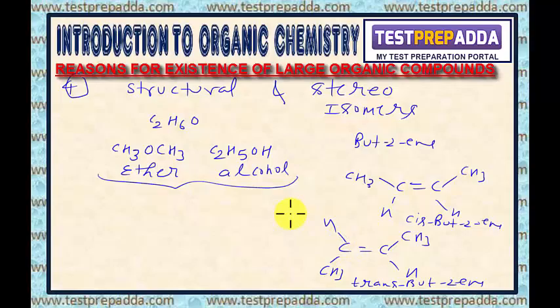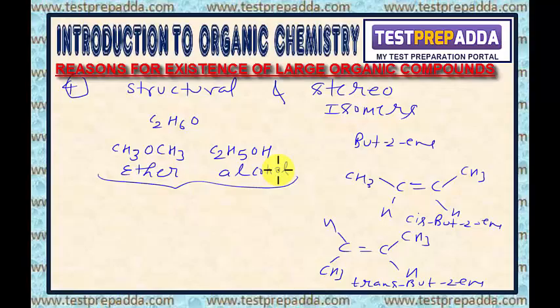So, students, isomerism is greatly responsible for the existence of a large number of organic compounds. This isomerism we will study later on in detail. So these are the different reasons for the existence of organic compounds. In the next video lecture, I will tell you about different types of carbon atoms and different types of hydrogen atoms possible in organic compounds. Thank you.